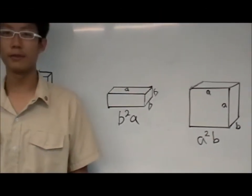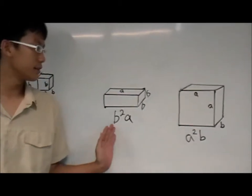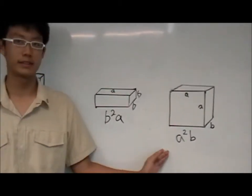And so now, as you can see, with the measurements before, we can form two other three-dimensional figures. One is B square A, and the other one is A square B, as can be seen from the diagram.